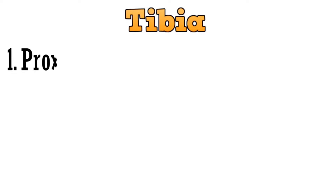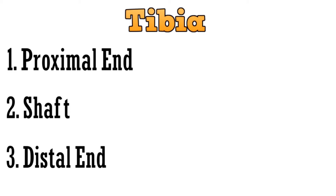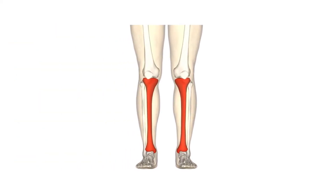Tibia is divided into 3 parts: the proximal end, shaft, and the distal end. We will discuss each of these parts separately and see what anatomical features are present in each part.